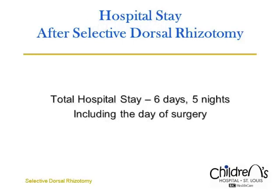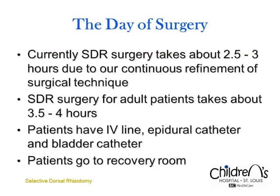Patients are admitted to the hospital through the same-day surgery unit on the day of surgery. They are discharged in the morning of the fifth day after the day of surgery. Hospitalization after dorsal rhizotomy generally follows the protocol described in the following screens. Surgery takes two and a half to three hours. For adult patients, surgery takes three and a half to four hours. Parents and families are updated every hour during surgery.